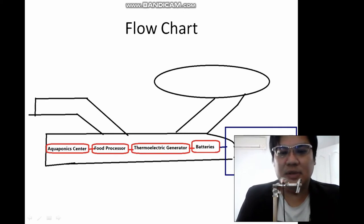This is the flow chart I want to show you. First is the aquaponics center where we grow the Carolina Reapers. It goes through a food processor, then through the Thermoelectric Generator, and stores the power in the batteries. Then the phaser cannons will use this.